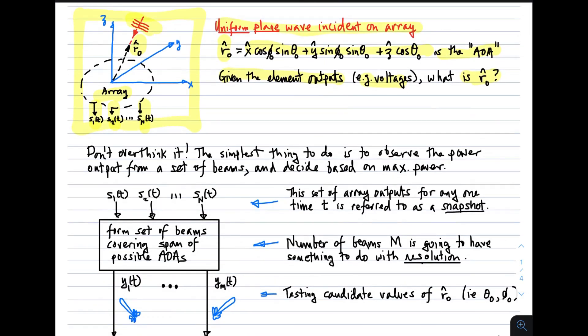My first comment is not to overthink this problem. Many people initially jump to a sophisticated algorithm which they may or may not understand. Usually the better thing is to think about the problem in the most basic and simple sense. The simplest thing to do is simply observe the power output from a set of beams, and then decide based on whichever beam produces the maximum power. In other words, form a bunch of beams, measure the power output, and presumably the beam which produces the greatest power corresponds to the direction of arrival.